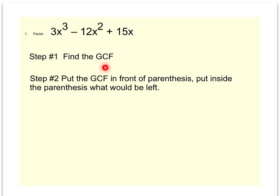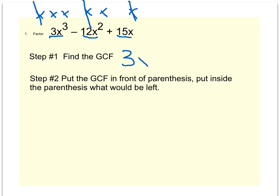There are simply two steps. Step one, find the GCF, which is what you did in the previous video. Step two, figure out what's left after we take out that greatest common factor. For the GCF, remember x to the third is x times x times x. x squared has two of them, and 15x has just one. The biggest number that divides evenly from 3, 12, and 15 would be three. We can only pull out one x from each group, so 3x is the GCF.